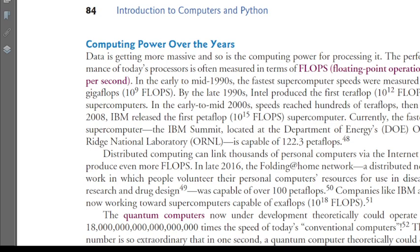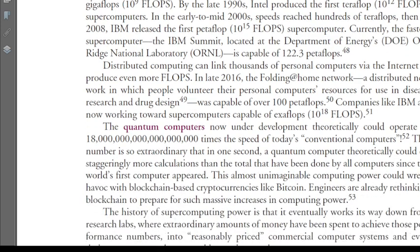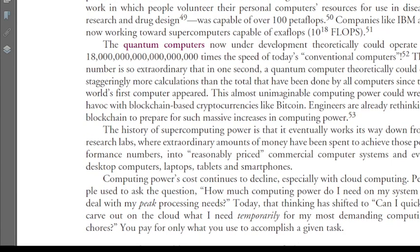By the late 1990s, Intel produced the first teraflop — 10 to the power of 12 FLOPS — supercomputers. In the early to mid-2000s, speeds reached hundreds of teraflops. Then in 2008, IBM released the first petaflop — 10 to the power of 15 FLOPS — supercomputer. Currently the fastest supercomputer, IBM Summit, located at the Department of Energy's Oak Ridge National Laboratory, is capable of 122.3 petaflops.